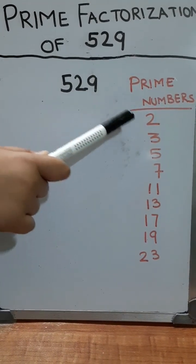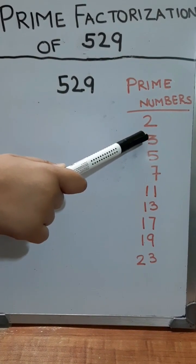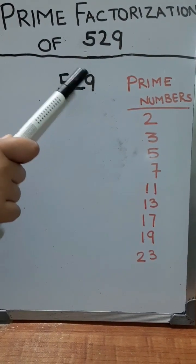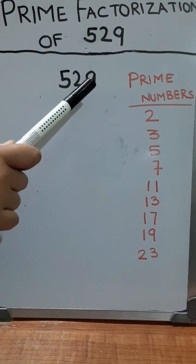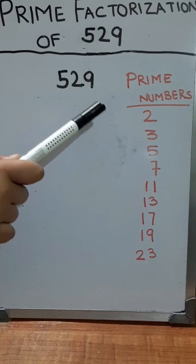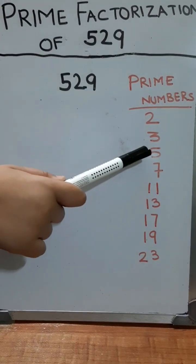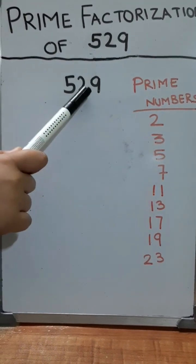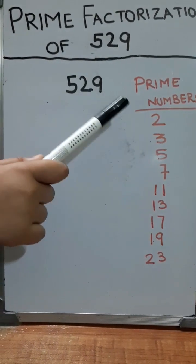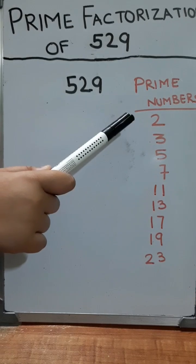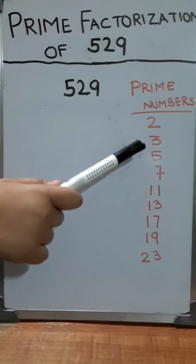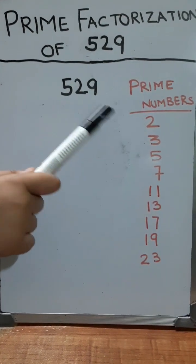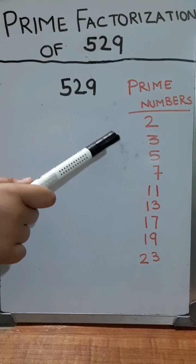The next prime number is 3. 3 also does not divide 529. The next prime number is 5. 529 is not divisible by 5. Next is 7. 7 does not divide 529.